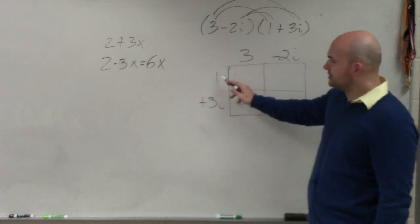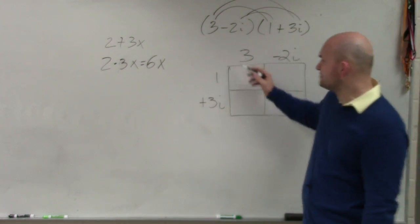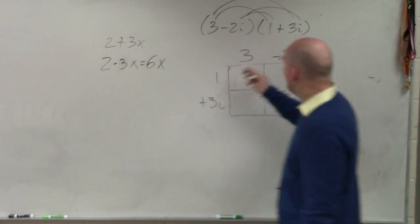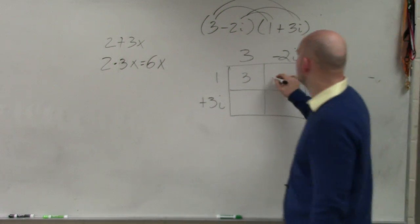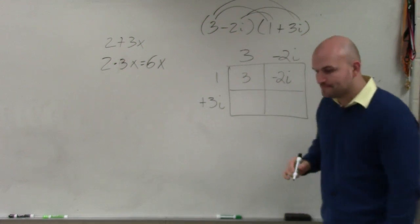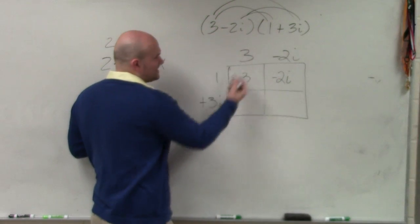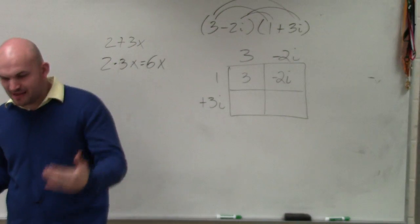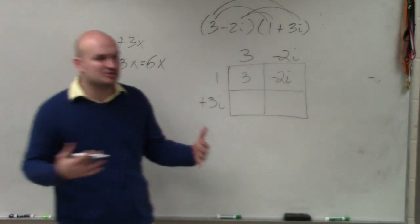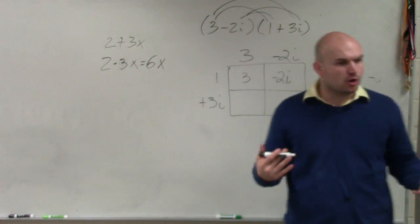but we can multiply them. So here is a real times a real. 1 times 3 is obviously 3. 1 times negative 2i, though, is just going to be negative 2i. 3 times 3i, again, all you're basically doing when you're multiplying a real times imaginary is just multiplying the coefficients. You're just multiplying the real portions of each number.